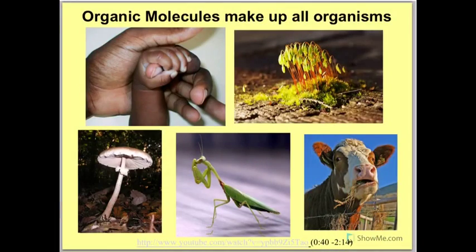What are those? The organic molecules that are present in an organism because of eating and digestion are used to build cellular structures like cell membranes and organelles, as well as repair damaged cells and tissues. And what's crazy is all the diverse structures of different organisms are made from the same basic molecules.